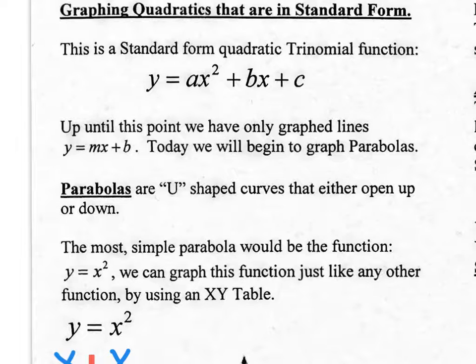First thing in this section is that you need to memorize a standard form quadratic trinomial. The word 'form' just means the way an equation looks. We've learned many forms before in math — slope intercept form y equals mx plus b, point slope form, and now standard form right here.